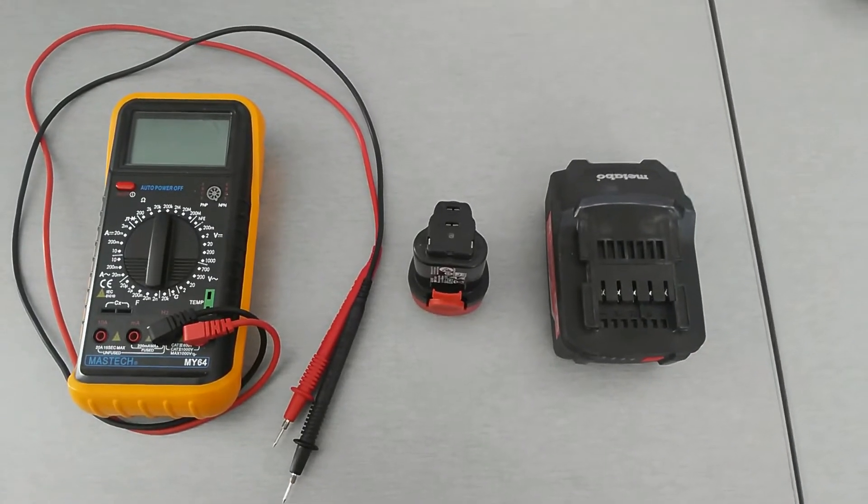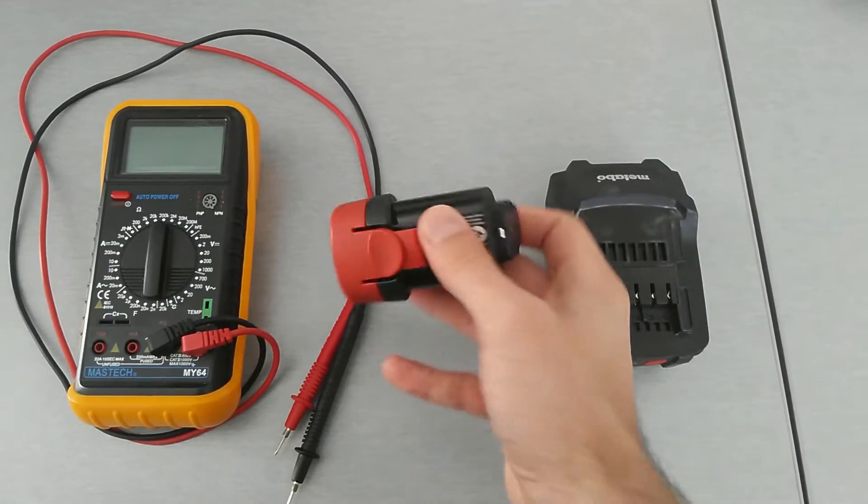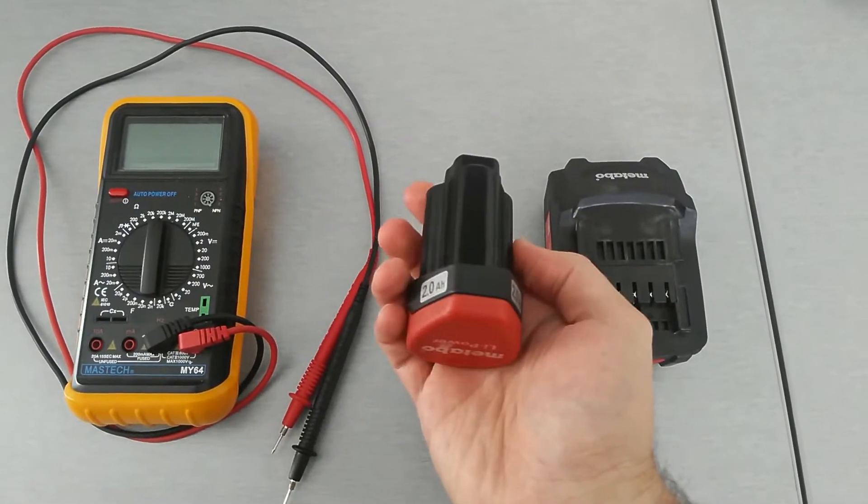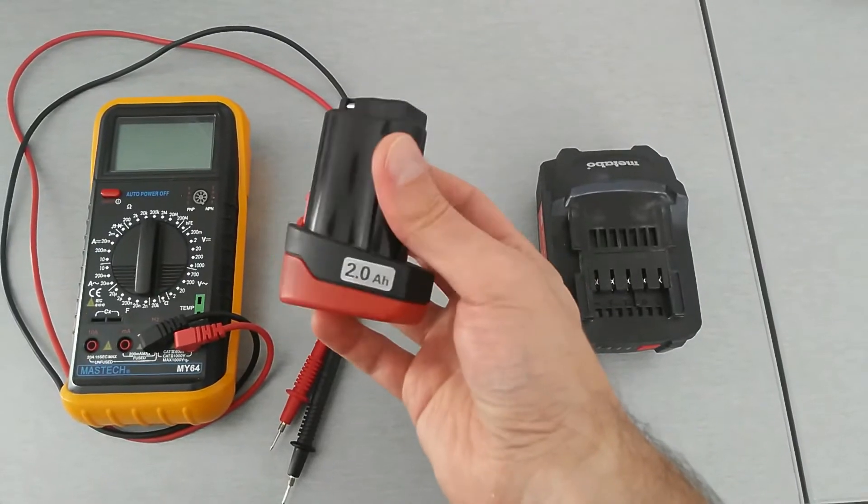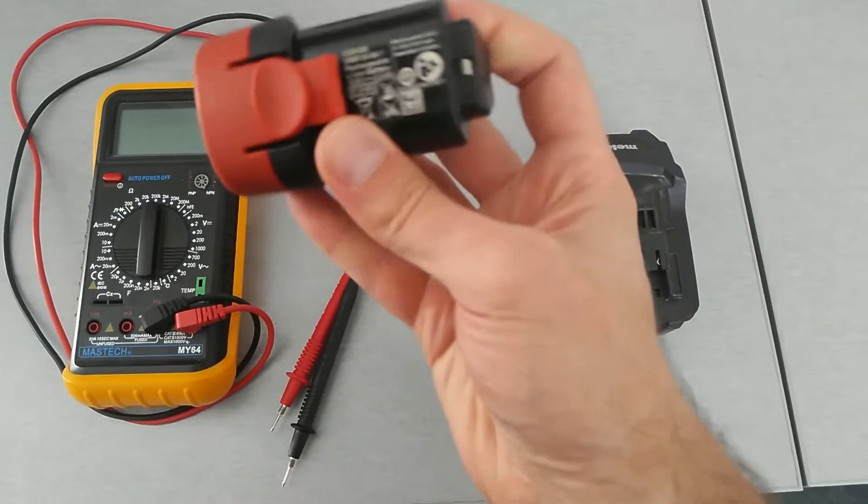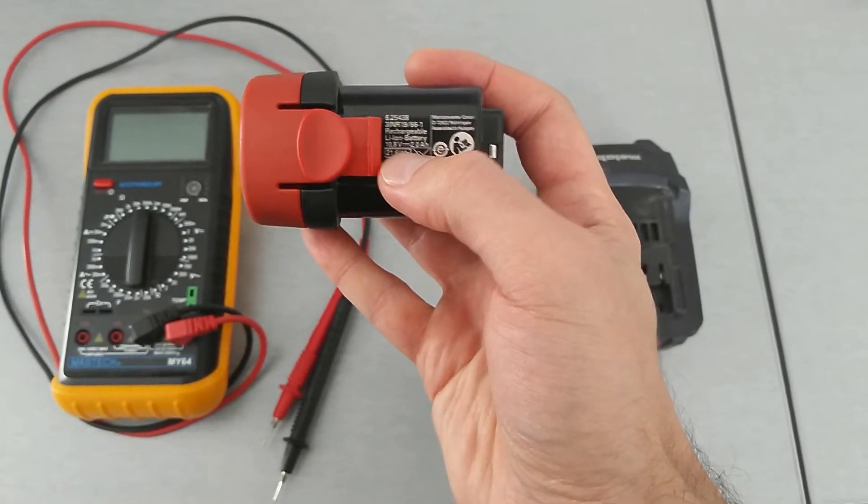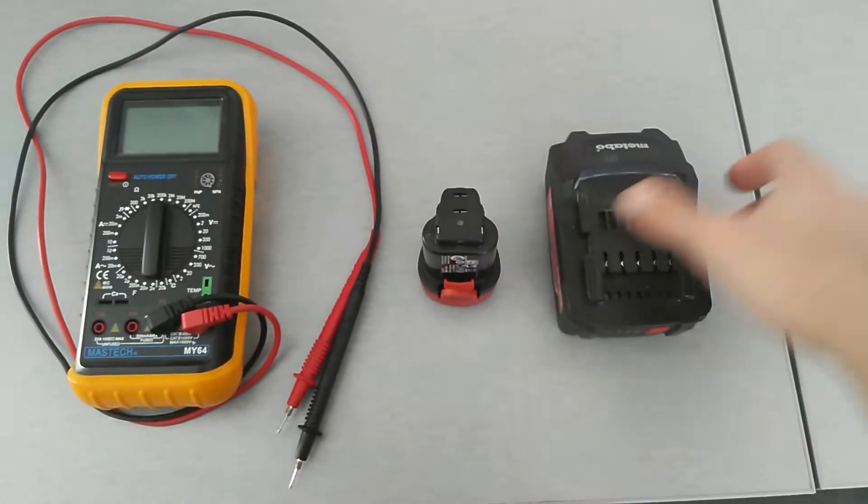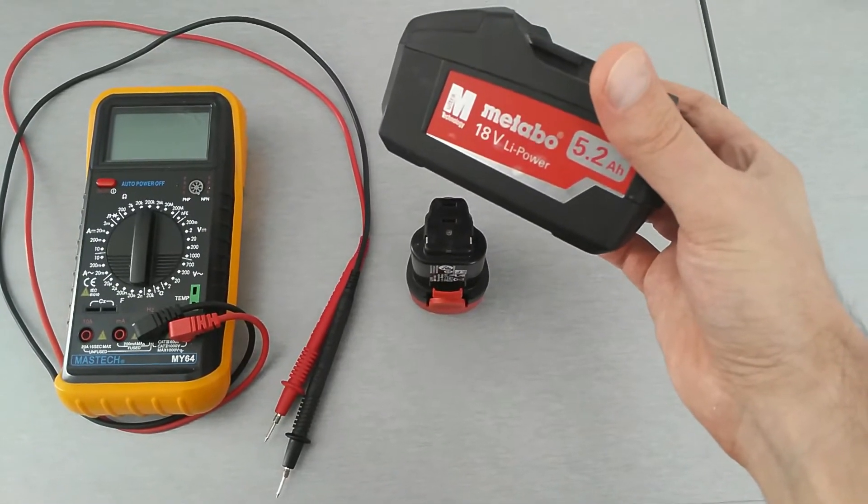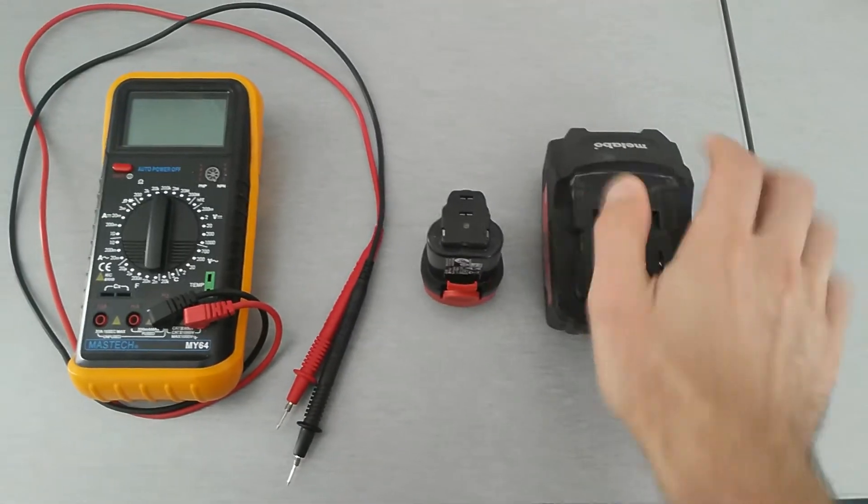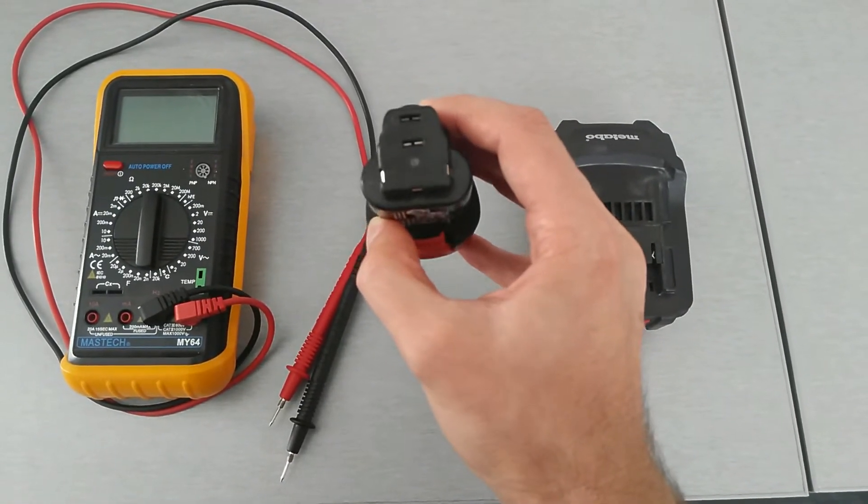Hello guys, in this video I'm going to show you how to measure the voltage of two lithium-powered batteries. Here's the first battery, it's 10.8 volts. The second battery is 18 volts. As you can see, both batteries have five terminals.